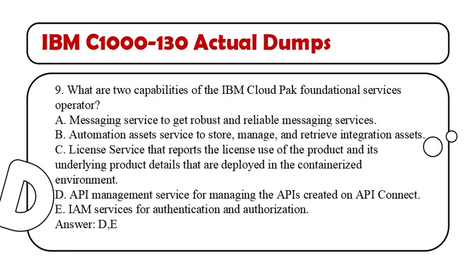Question 9. What are two capabilities of the IBM Cloud Pak foundational services operator? A. Messaging service to get robust and reliable messaging services. B. Automation assets service to store, manage, and retrieve integration assets. C. License service that reports the license use of the product and its underlying product details deployed in the containerized environment. D. API management service for managing the APIs created on API Connect. E. IAM services for authentication and authorization. Answer: D, E.